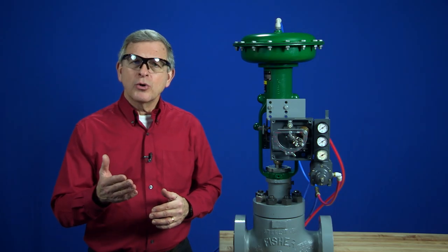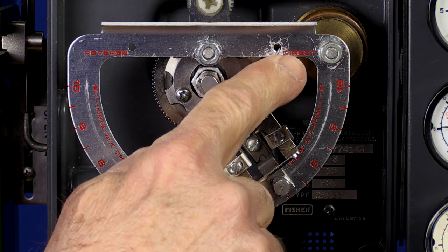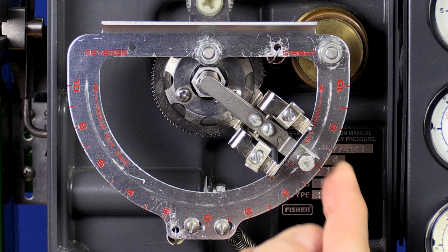To get started, we'll move the flapper assembly to the mid-range of its travel on the direct side of the summing beam, or about to the number six on the scale.